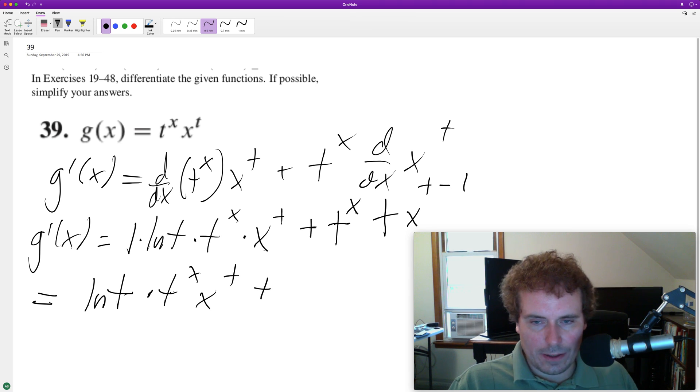and then over here we get t raised to the x times t. You can combine these two, since this is t raised to the one, you can rewrite it as just t raised to the x plus one.